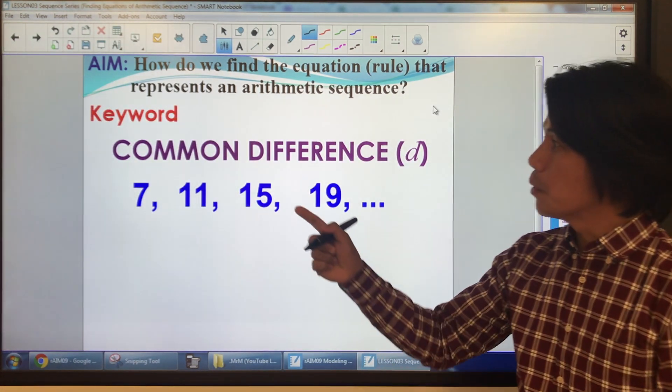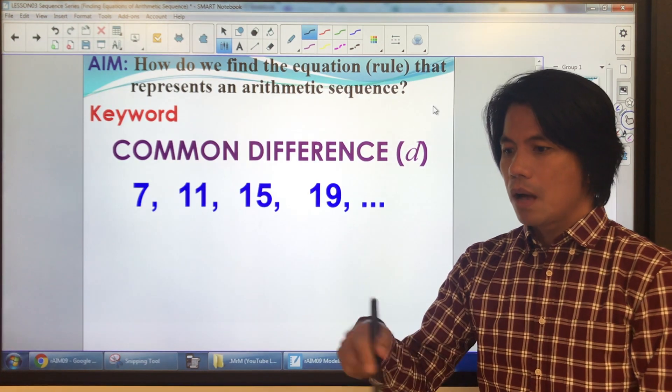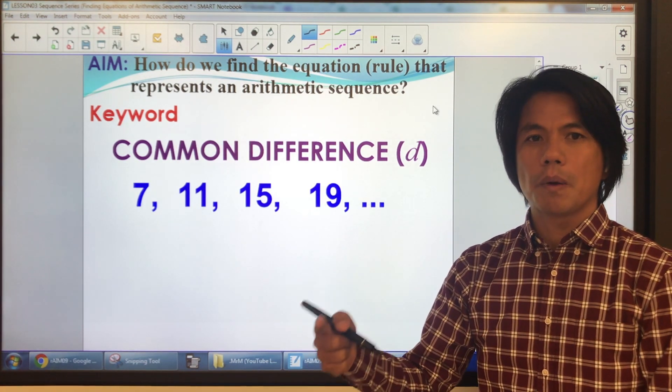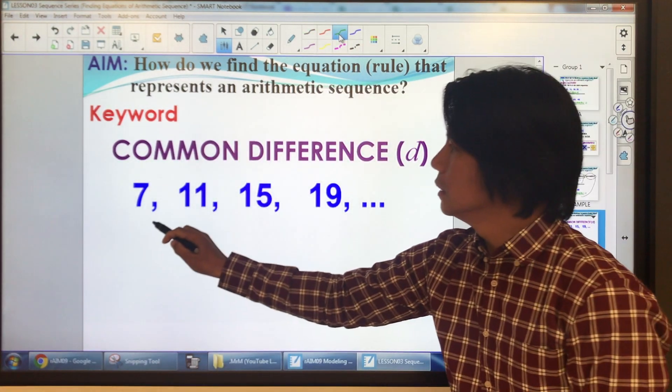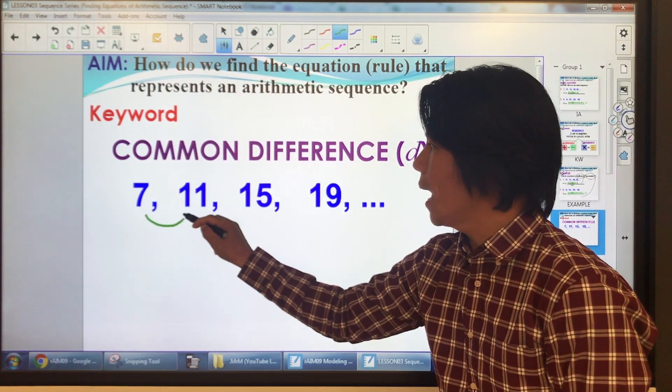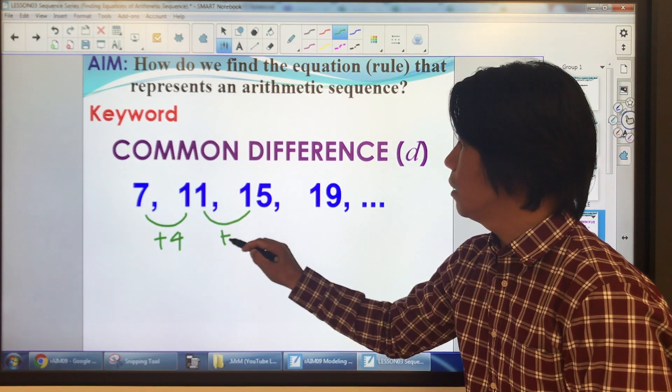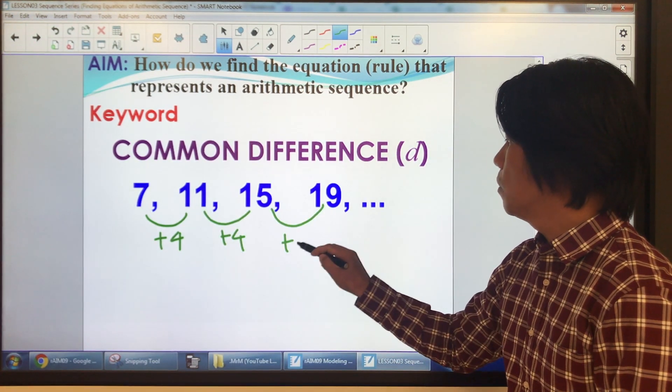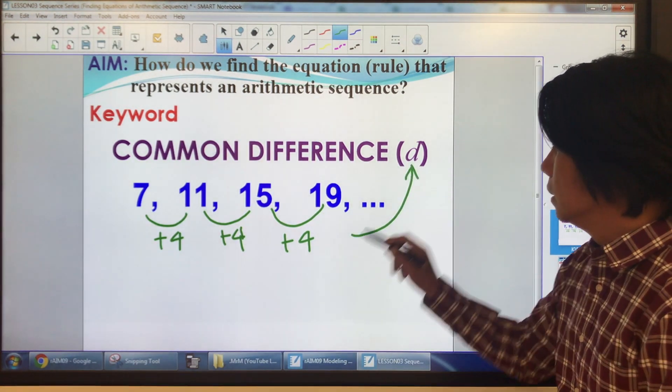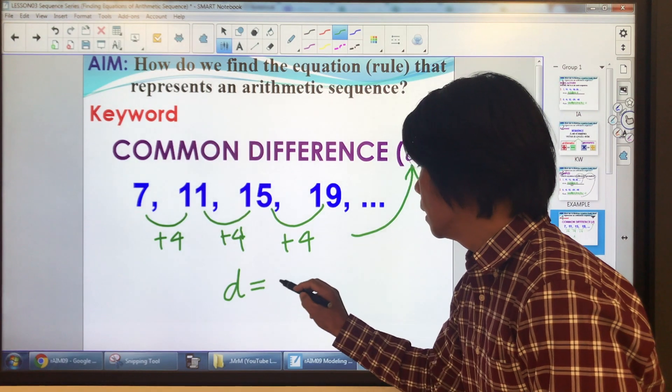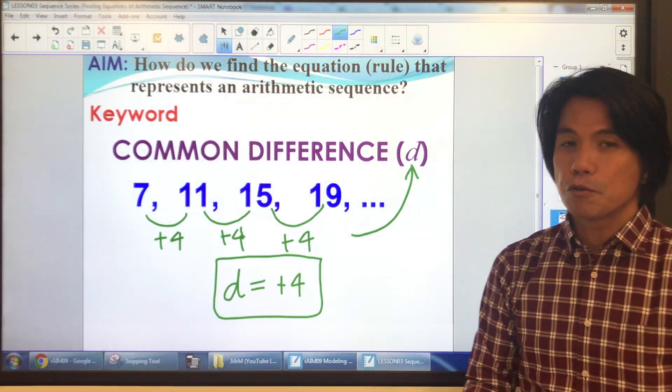Now, let's have another keyword. Common difference. What is it? It is how the sequence progresses. What I mean by that is, take a look at the terms. We're adding 4, and here we're adding 4, we're adding 4. This is what you call common difference. That is your D. So, therefore, here D is positive 4. It's like a rule.